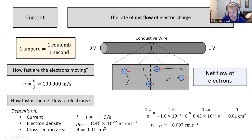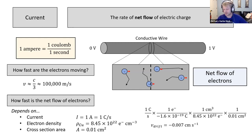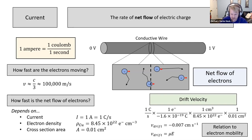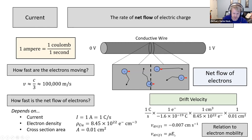The drift velocity is related to charge mobility — the electron mobility in N-type materials, or hole mobility in P-type materials. The drift velocity of electrons is equal to the electron mobility times the electric field, where the electric field is the voltage divided by the distance across which it's applied.